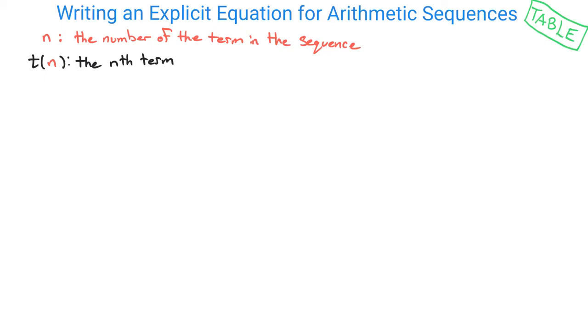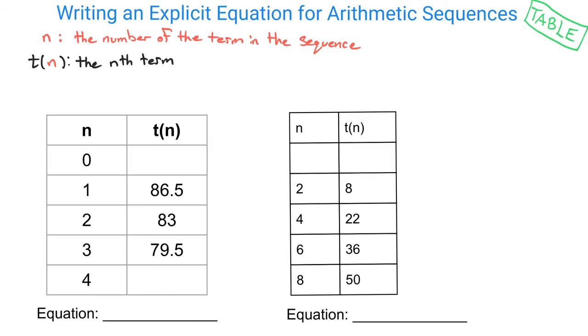So let's take a look at some examples. Our first example with the table here, what we have is n values here on the left, so 0, 1, 2, 3, 4—they're going up by 1 every single time. And t(n) starts at 86.5, 83, and 79.5.